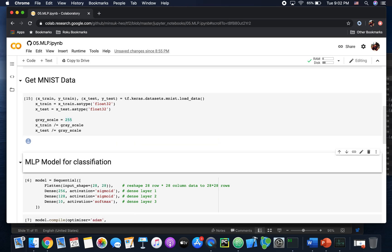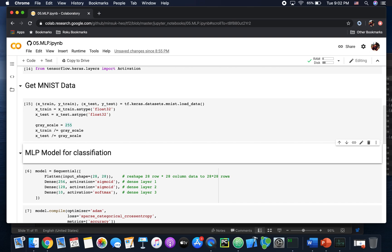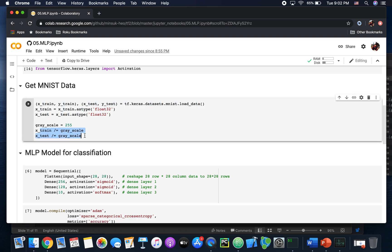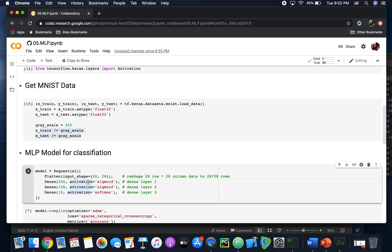This part is collecting MNIST data. As you can see, I'm getting the data from tf.keras.datasets mnist here. And I normalize using these lines. I flatten the data to 28 by 28 data here. Just run this code.